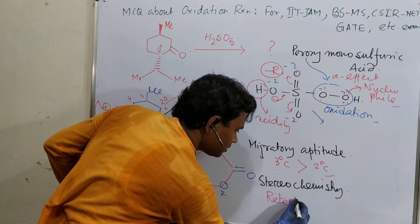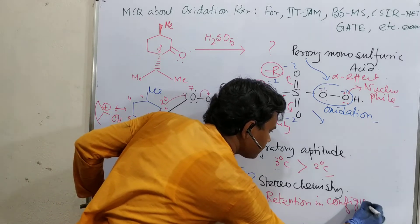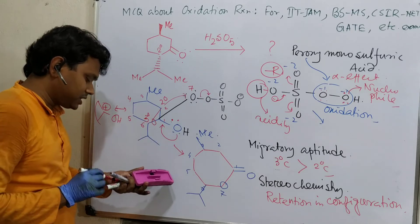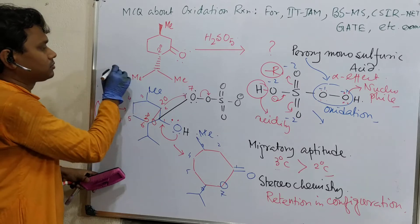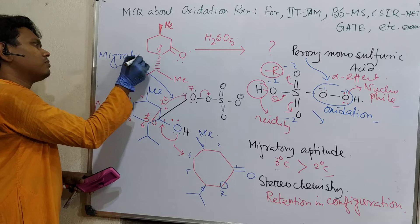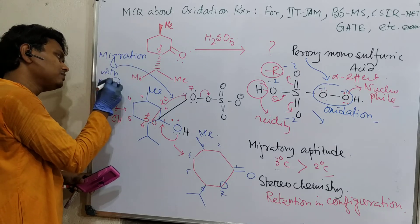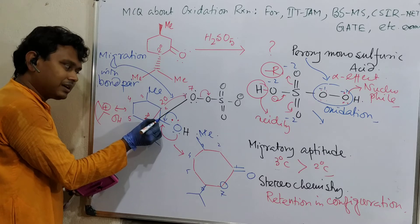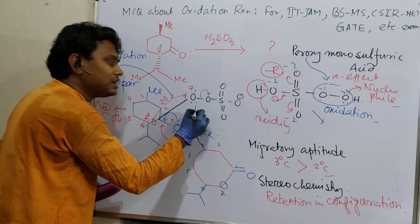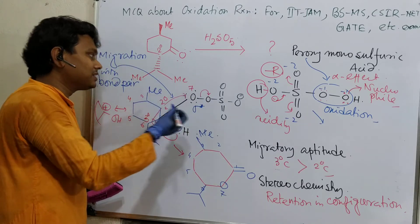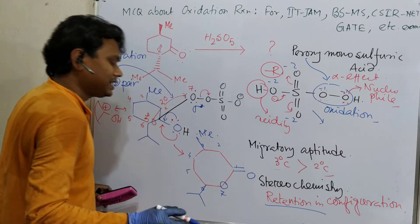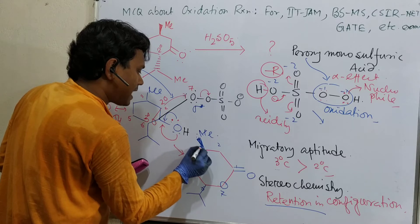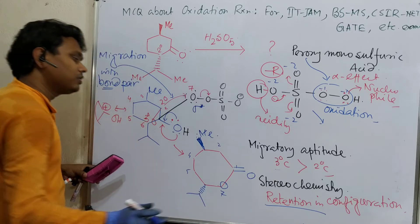Second point: stereochemistry — retention in configuration. Why? This group is migrating with its bond pair. This oxygen is pushing, so this carbon having excess electrons causes the bond pair to migrate and attack the sigma-star of the oxygen-oxygen single bond. Since it migrates with the bond pair, there is retention in configuration. So no change in configuration: if it was up, it remains up; if it was down, it remains down.